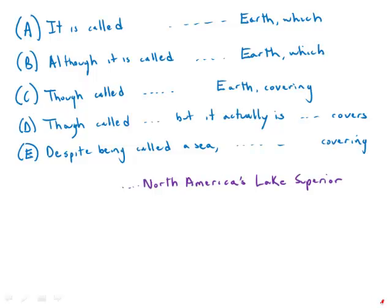So this one about the Caspian Sea, the prompt has a few issues. The first one is the clause that begins with which. By the modifier touch rule, this seems to be modifying earth, but that doesn't make any sense.